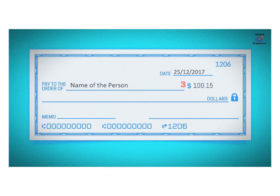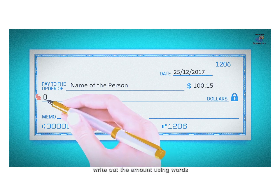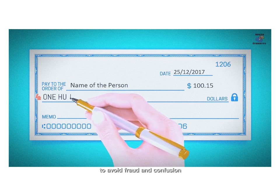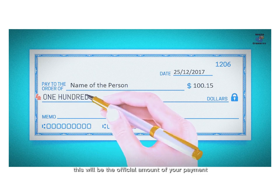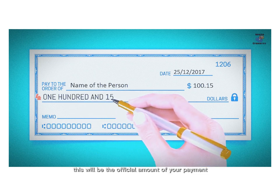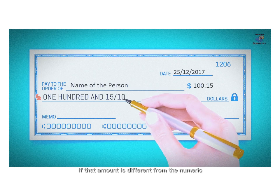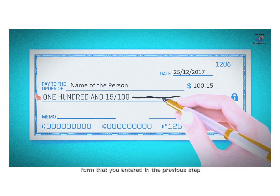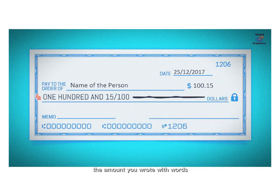Number 4: Amount in Words. Write out the amount using words. To avoid fraud and confusion, this will be the official amount of your payment. If that amount is different from the numeric form that you entered in the previous step, the amount you wrote with words will legally be the amount of your check.